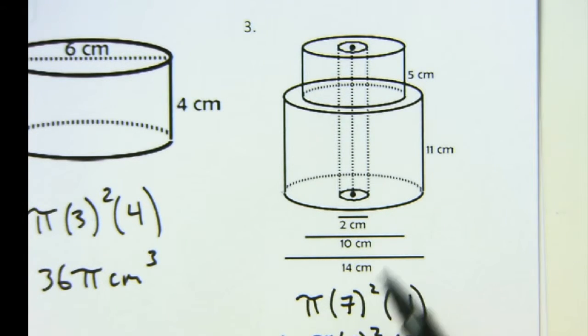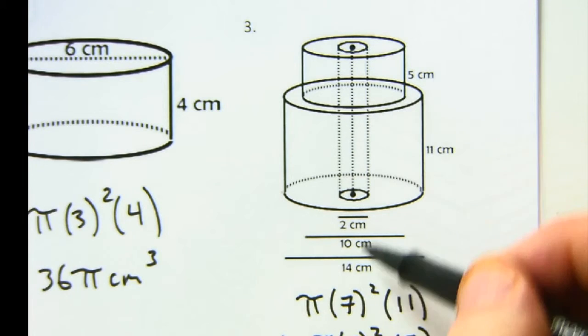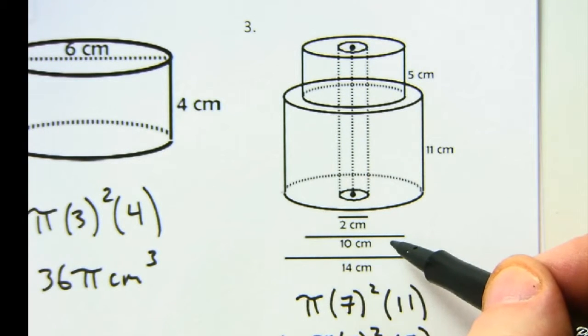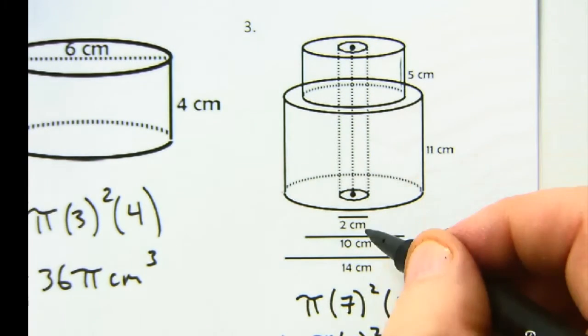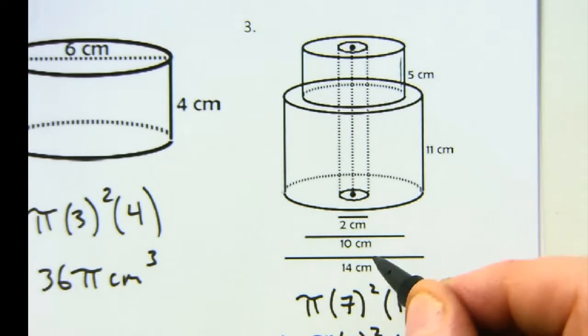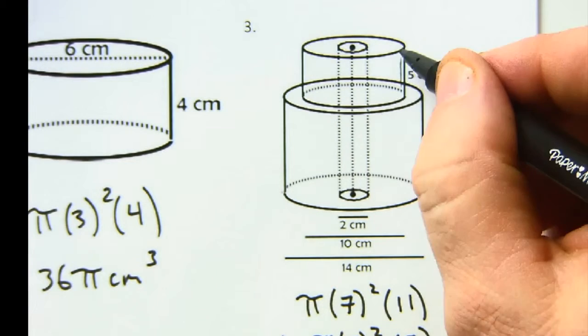The first cylinder has got diameter 14, so radius is 7. Height is 11. Got it. Next one. Diameter is 10, so 5 is the radius. Height is 5. Got it. Now I've got a hole so I'm going to subtract out pi r. 1 is the radius and the height is the 16.